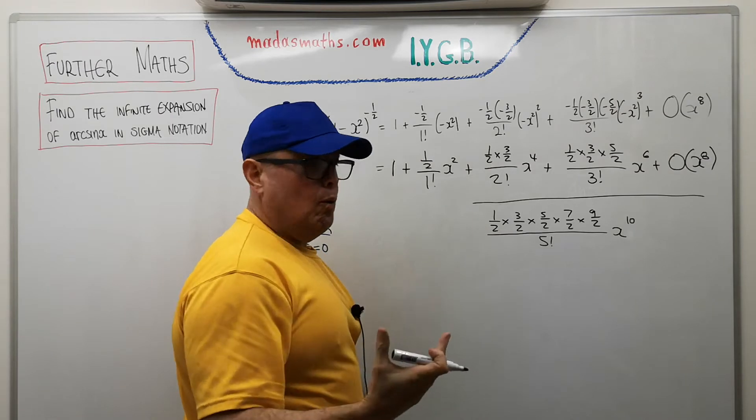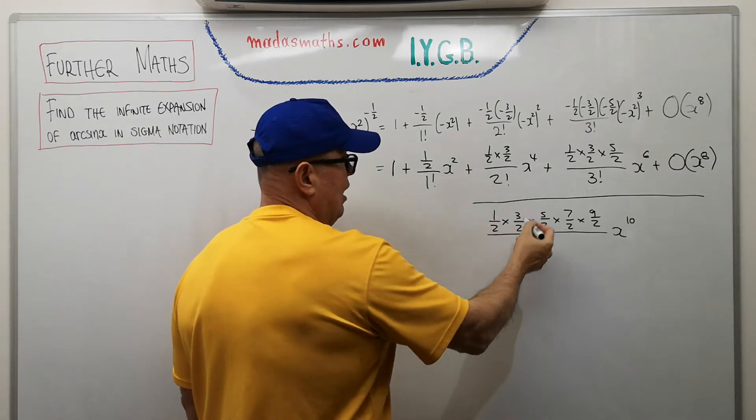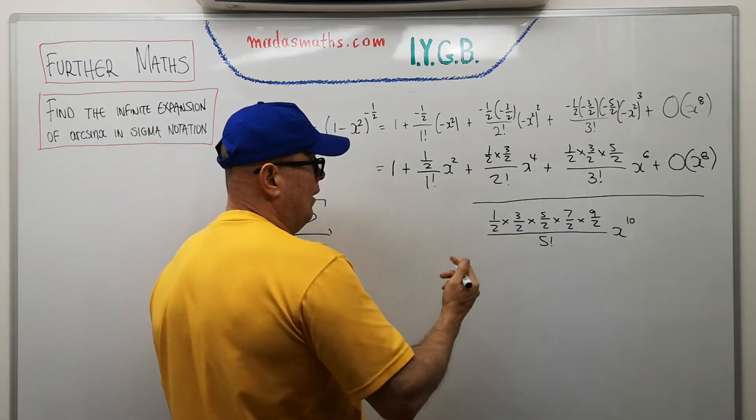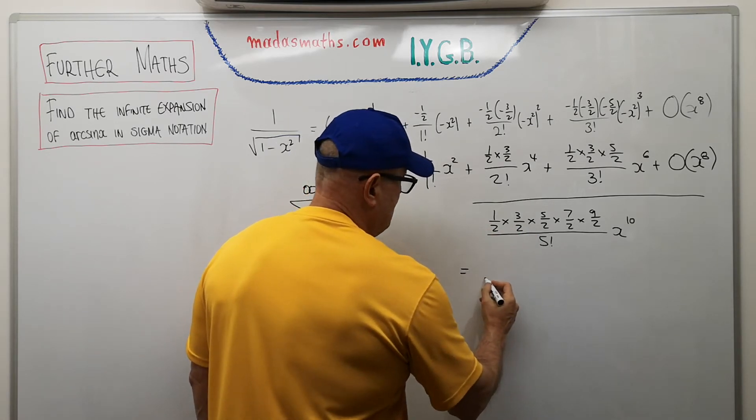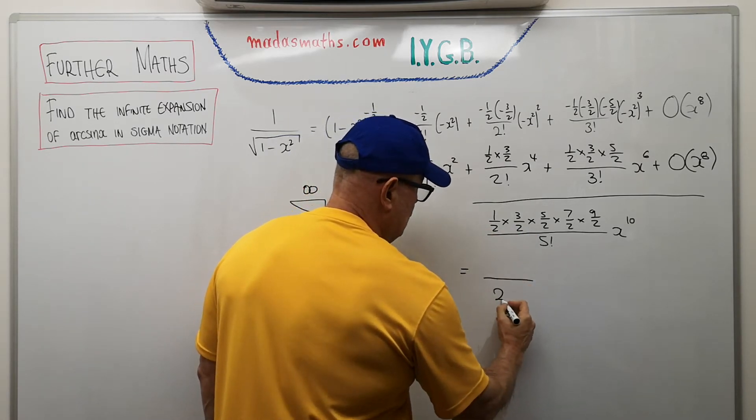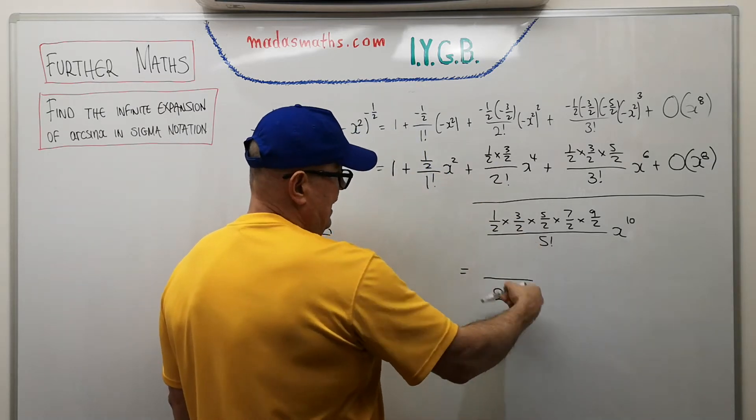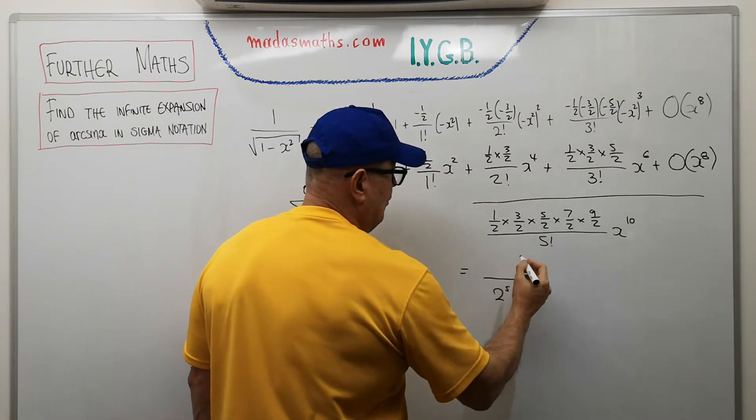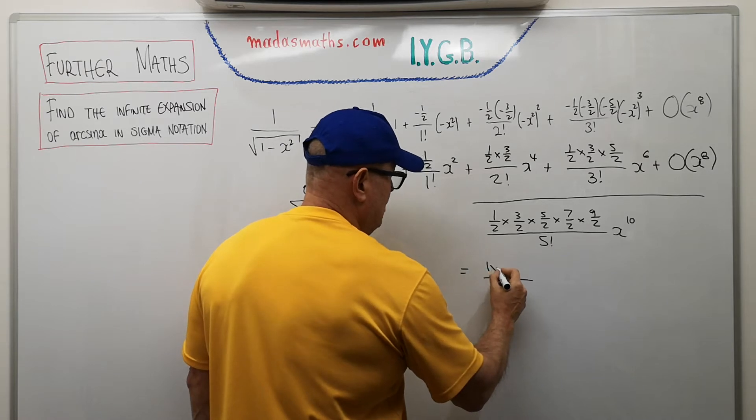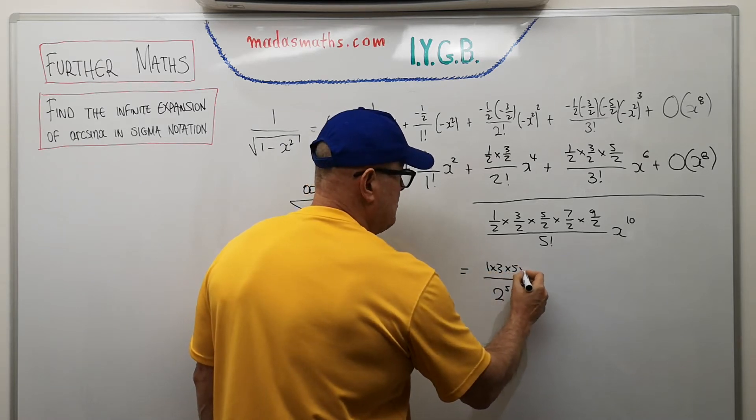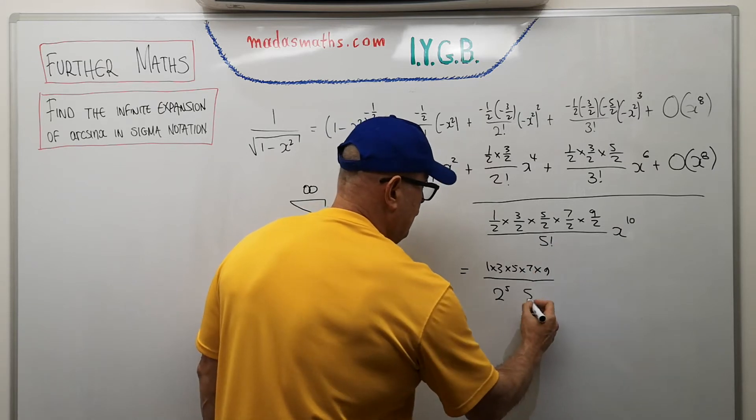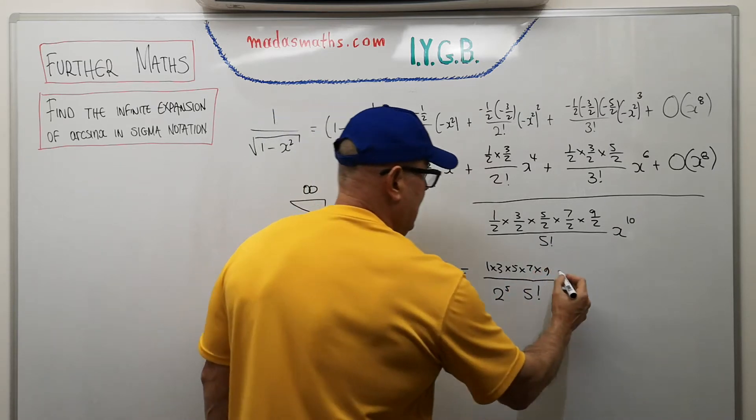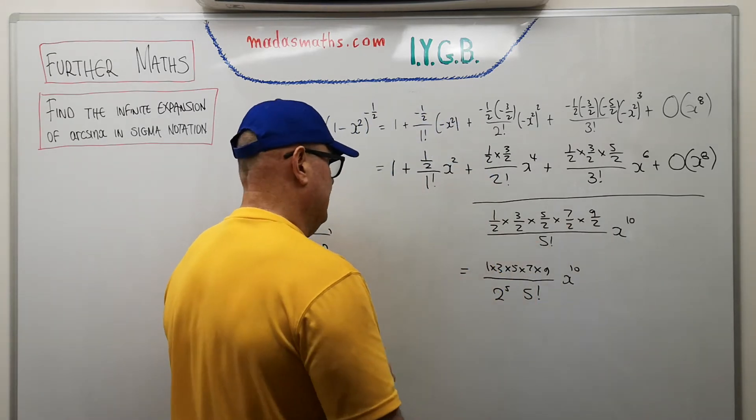So what can I do with this particular term? Well, first of all, these halves, it's all halves in there. How many halves are multiplied together? Quite clearly, five. So I can actually write them as follows. I can write this particular term as two to the power of five. That's a half written at the bottom, multiply five times. And then on the top, I'll be left with one times three times five times seven times nine. And of course, my five factorial, which was already there, and the x to the 10 on the side.